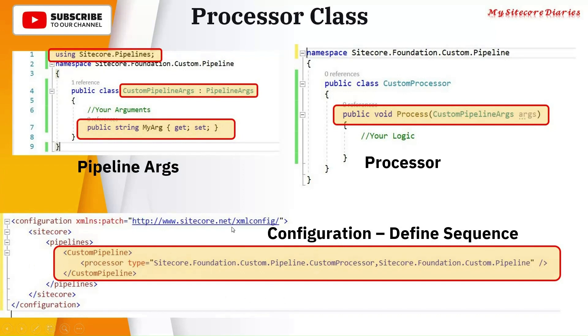Third, you write your custom patch file, which will either override an existing pipeline or insert a new pipeline. This is how you write your processor class.